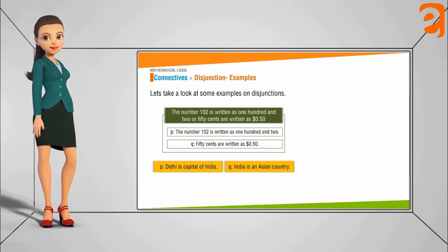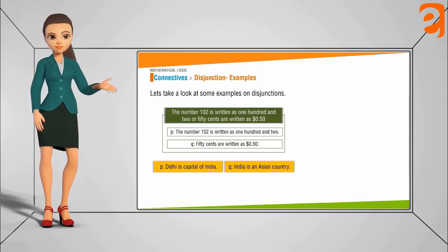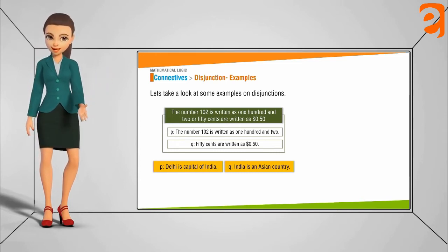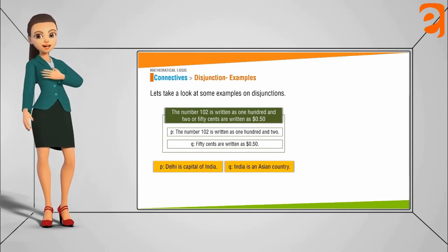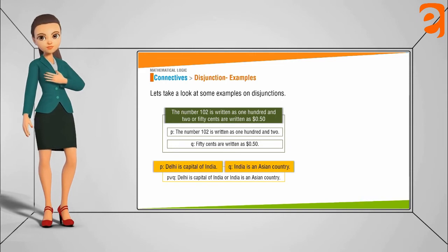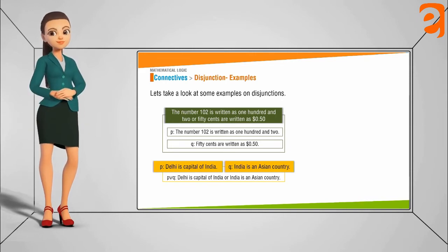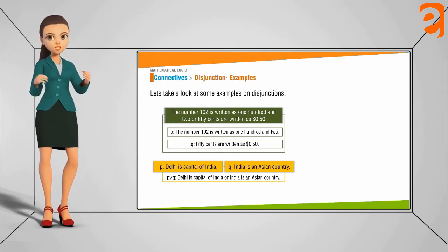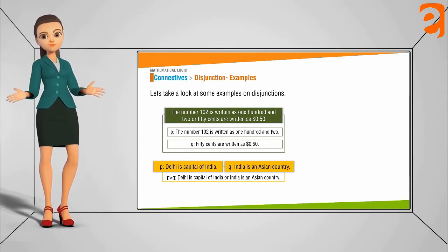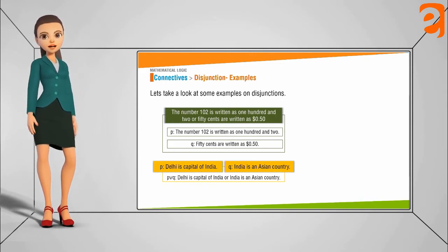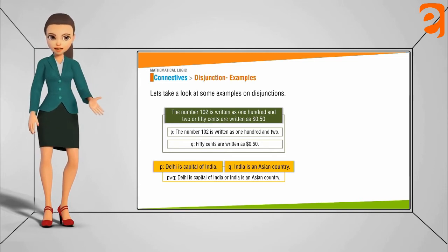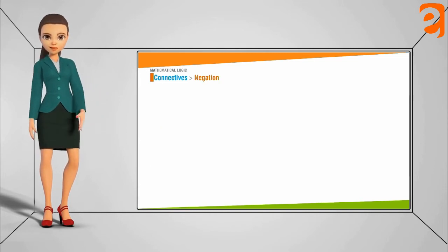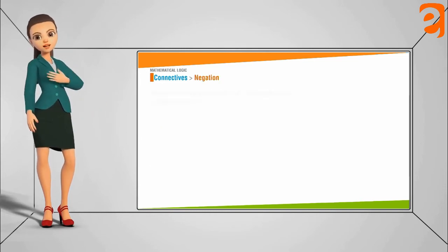Take the statements: 'Delhi is the capital of India' and 'India is an Asian country.' Joining these two statements with the word 'or' gives: 'Delhi is the capital of India or India is an Asian country.'